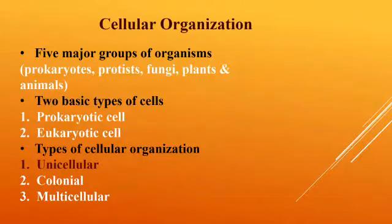From today, we are going to start cellular organization. There are five major groups of living organisms: prokaryotes, fungi, plants, and animals. Related to these five groups, there are two basic types of cells — prokaryotic cells and eukaryotic cells.